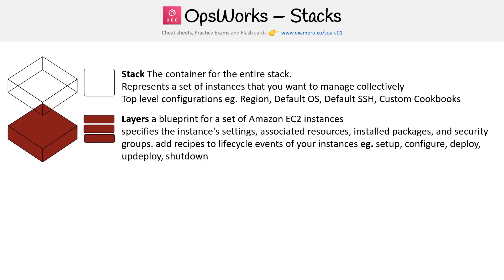Then you have your layers. A layer is like a blueprint for a set of EC2 instances — it specifies the instance settings, associated resources, installed packages, and security groups. You can also add recipes to the lifecycle events for your instances: setup, configure, deploy, undeploy, and shutdown — which we will look into in greater detail.